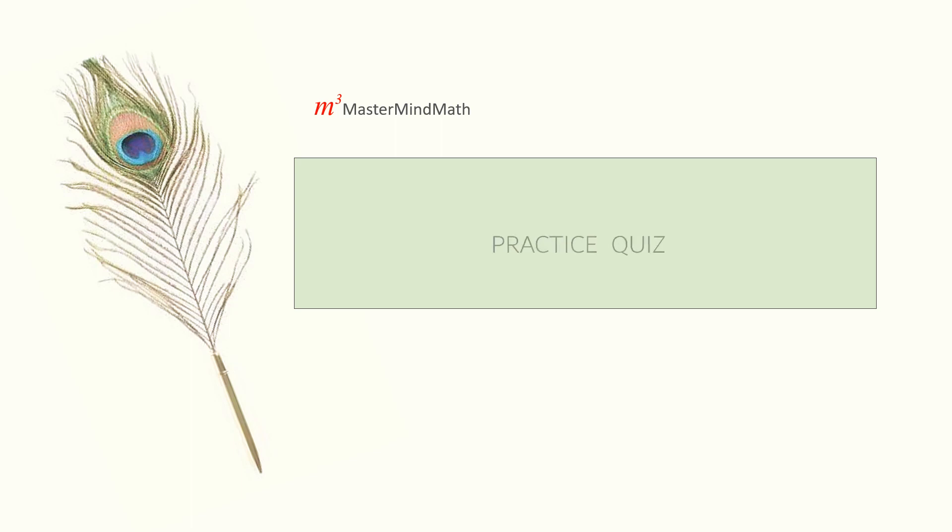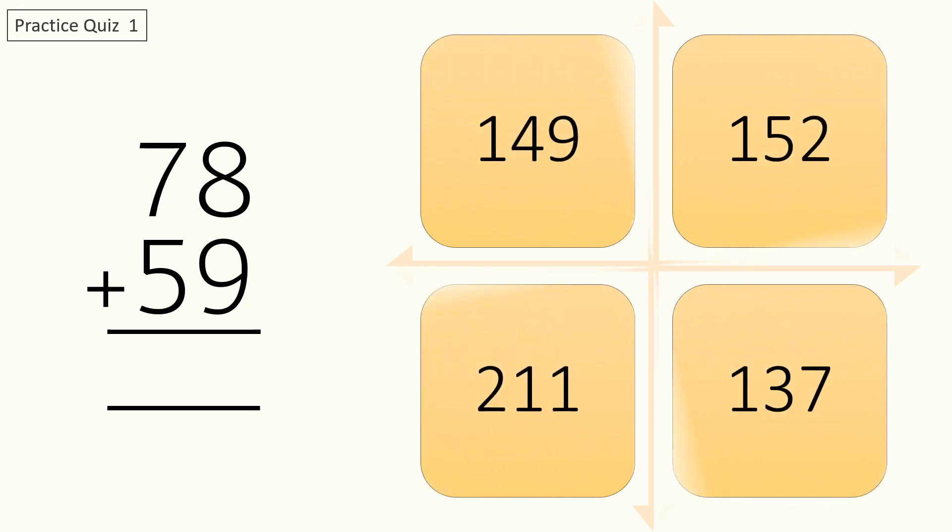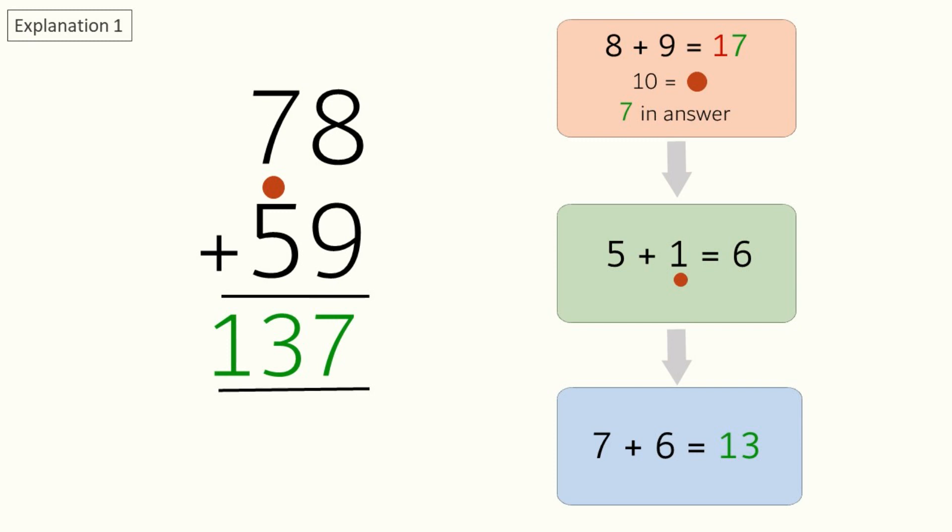We have two questions in this practice quiz. Please feel free to pause the video to solve them. The answer and explanation is provided after each question. Practice quiz one: what is seventy-eight plus fifty-nine? And here are your options. This is the answer for practice quiz one.